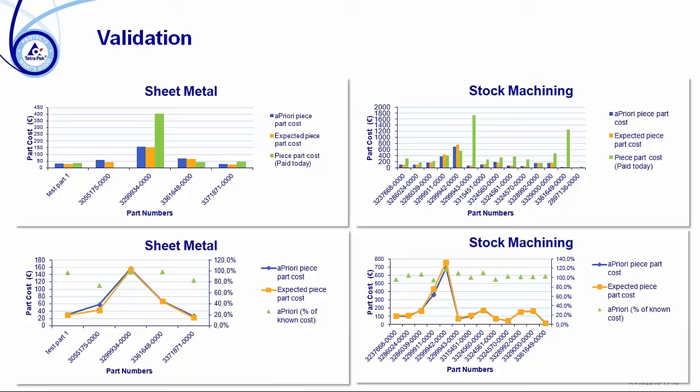Just to give examples of that validation: we have used aPriori, we have done manual costing with our experts, and we have compared to what we actually pay today. With the adjustments we have done, we are in at least some of the process groups very close to reality. As you can see when you look at the data, we have also found some outliers where we really do have saving opportunities. Comparing aPriori to the other methods has really given us the trust and understanding of the tool.